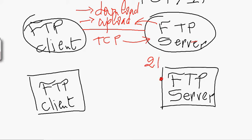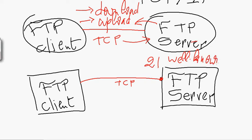The FTP server is always listening at port 21 for an incoming request. The FTP client is going to initiate opening a TCP connection with the FTP server at port 21, which is a well-known default port used by FTP protocol. On the FTP client, the operating system will assign a port number — say port 50,000 — to the FTP client process.